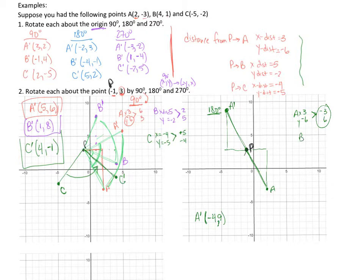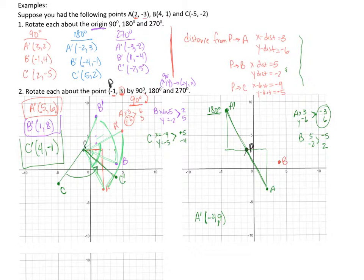For B, distances were (5, -2); taking the opposites gives (-5, 2). B is at (4, 1). From point P, I go 5 left and 2 up, landing at B prime. Reading the coordinate, B prime is at (-6, 5).